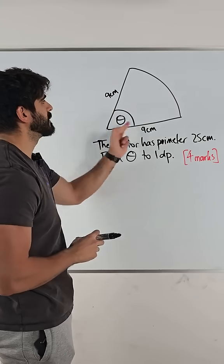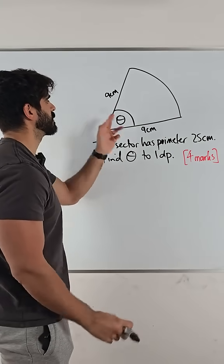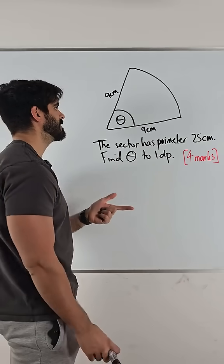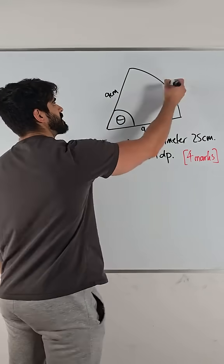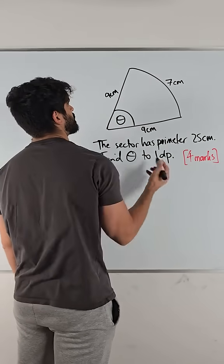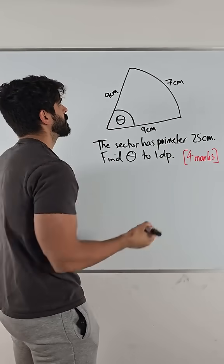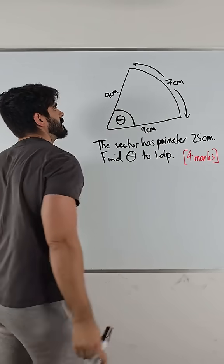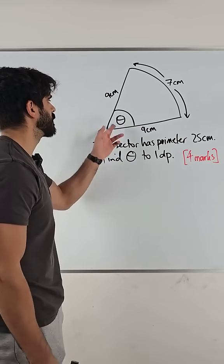If the perimeter is 25, we have 9 and 9. 9 plus 9 is 18. That must mean that this is 7, so they all add up to 25. So the arc length is 7 and it's this arc length that's going to allow us to work out theta.